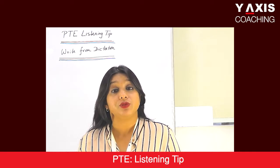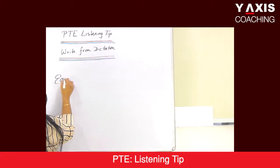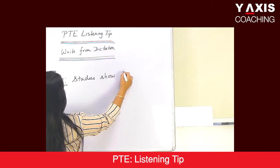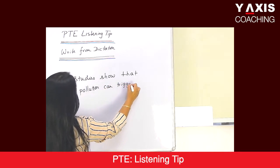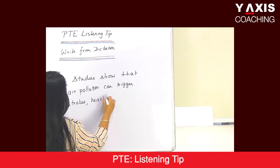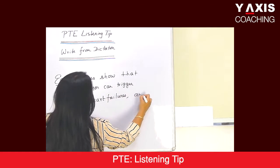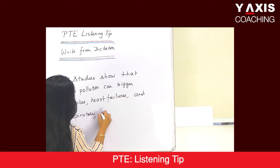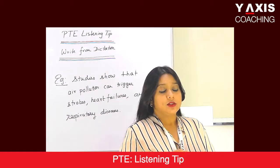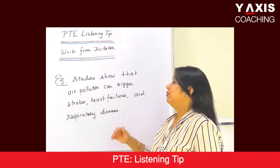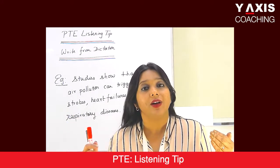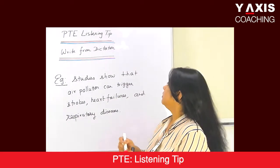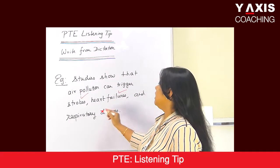Even commas play an important role. Let me elaborate with an example. Suppose the sentence is something like this: 'Studies show that air pollution can trigger strokes, heart failures, heart and respiratory diseases.' In this sentence, we have a list of items. The rule of English grammar is that when we have such a list, we should put a comma after each and every item in the list. So the items are: number one, strokes; next, heart failures; and then respiratory diseases.